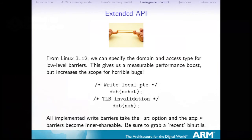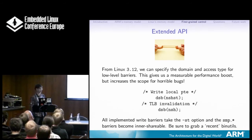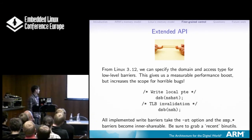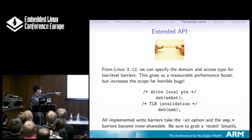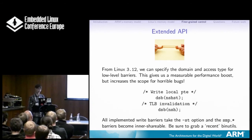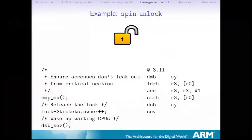For 3.12, you can now write code like this: DSB and pass in NSHST as a token, giving you a DSB NSHST. This is some code I added to TLB flush code — a non-shareable store-only DSB, and then later a non-shareable full access DSB. And the SMP barriers are now inner-shareable as well. You need a recent binutils — I got a lot of flack on the list because if you use binutils more than three years old you can no longer build a V7 kernel, but I really don't care — just upgrade.